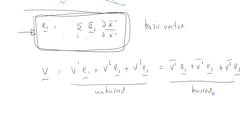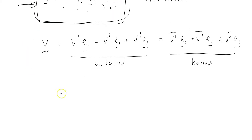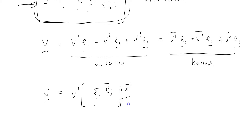I want a relationship between v1, v2, v3 and v1 bar, v2 bar, v3 bar. So I'm going to transform it. I'm going to say v equals v1 times e1, and I'm going to expand e1 according to this formula: sigma over j, e_j bar, dx bar j by dx i — using i equals 1 in that formula to recreate e1.